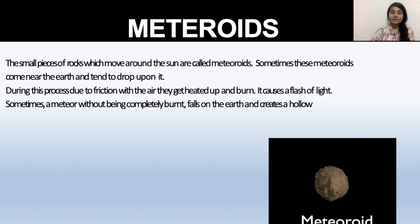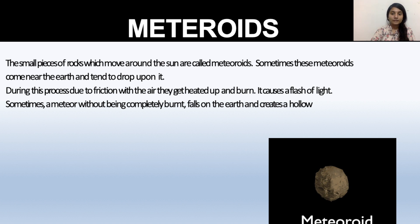The last topic is meteoroids. Meteoroids are small pieces of rocks that move around the Sun. These meteoroids tend to drop near the Earth — they come toward Earth very rapidly. Sometimes when a meteoroid comes down, it burns and creates a flash of light. Sometimes it burns on Earth and creates a deep crater or hollow depression where it lands.